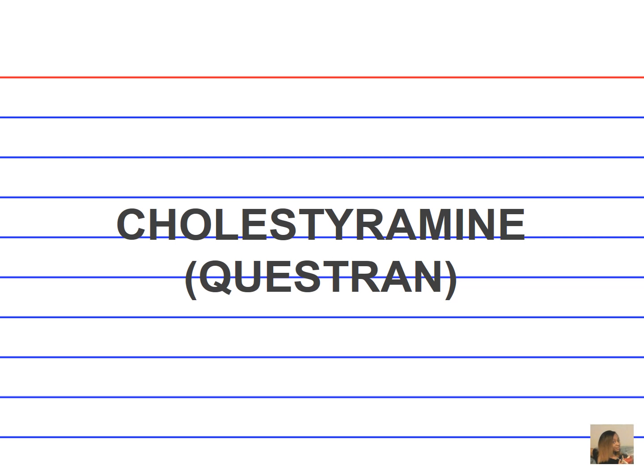Cholestyramine, Questran. What is the drug classification for cholestyramine? It's a bile sequestering agent. What are the indications for administering cholestyramine? High cholesterol and LDLs. When should cholestyramine be administered? It should be given in the evening. What are the side effects? Constipation and steatorrhea — that is loose, greasy, and foul-smelling stool.